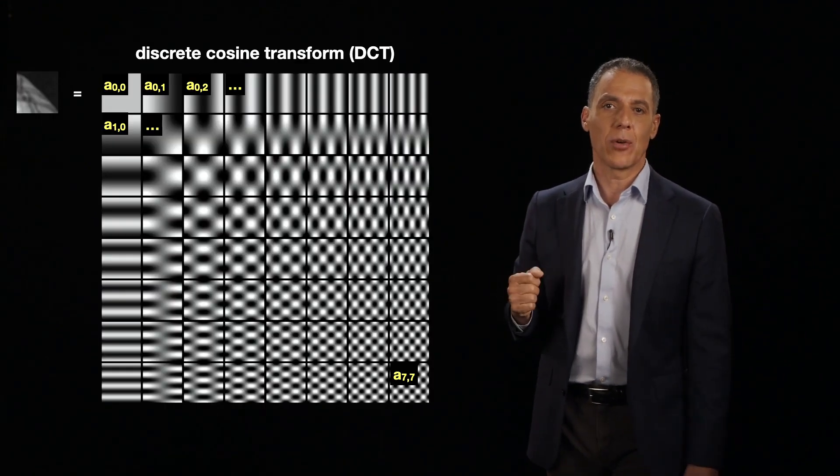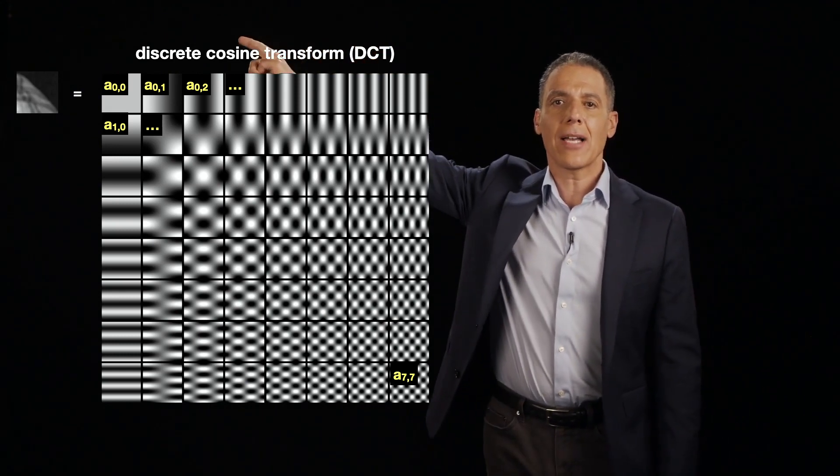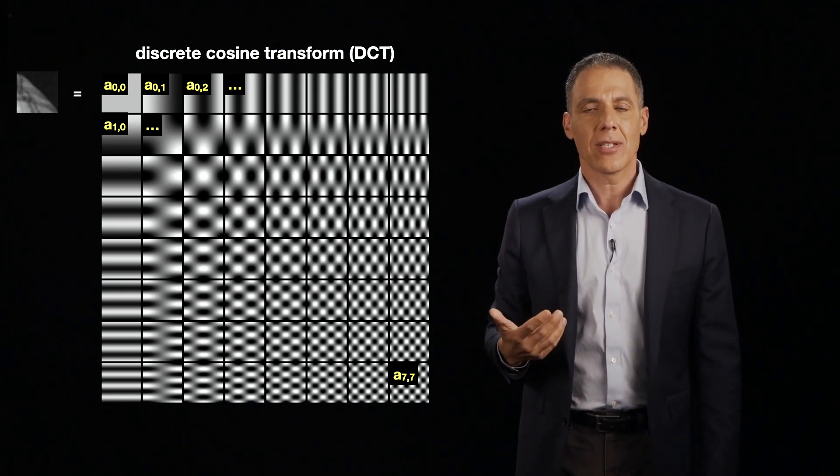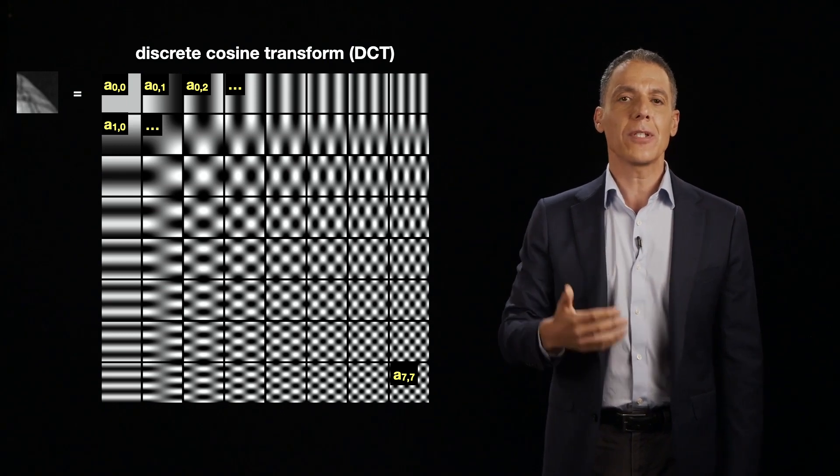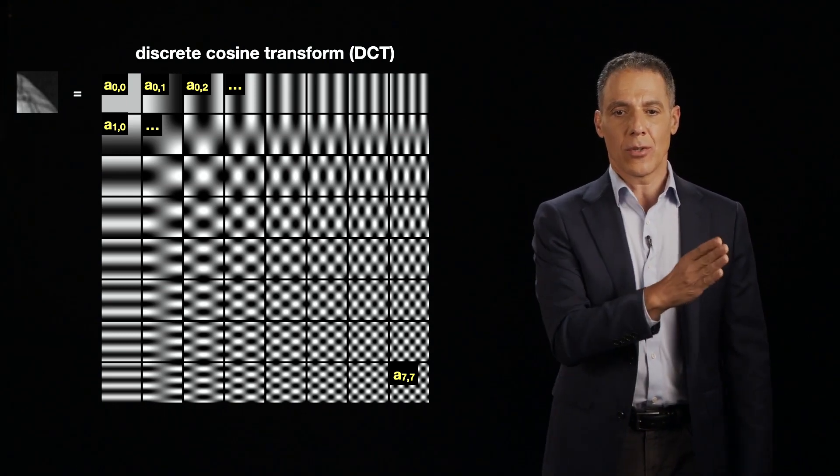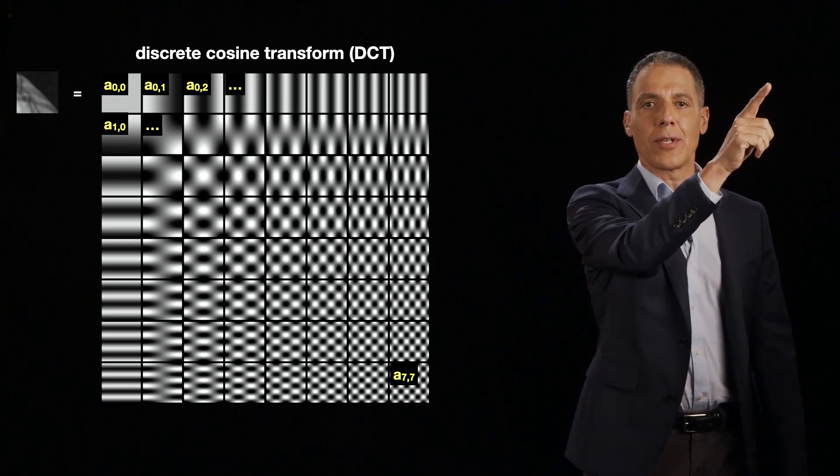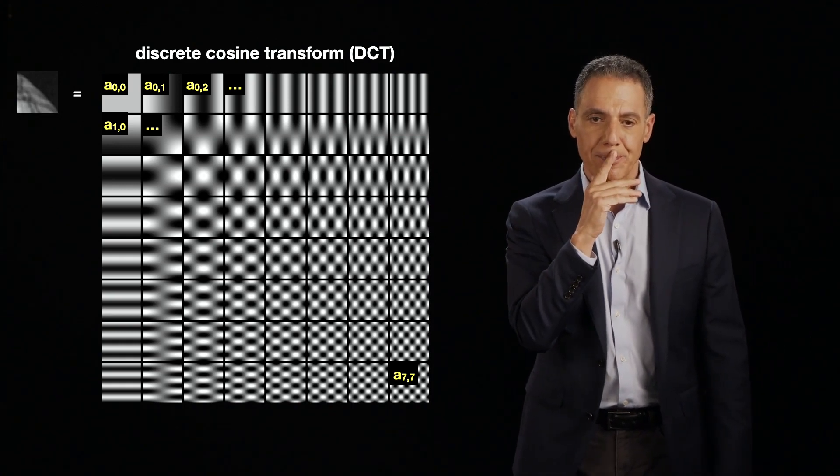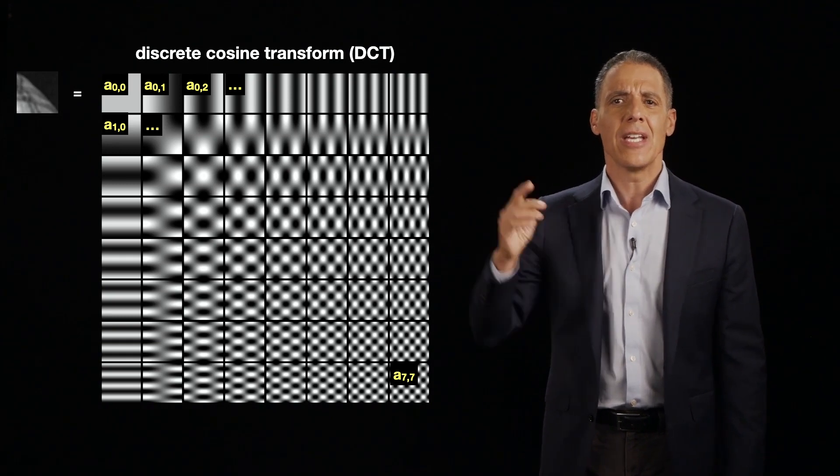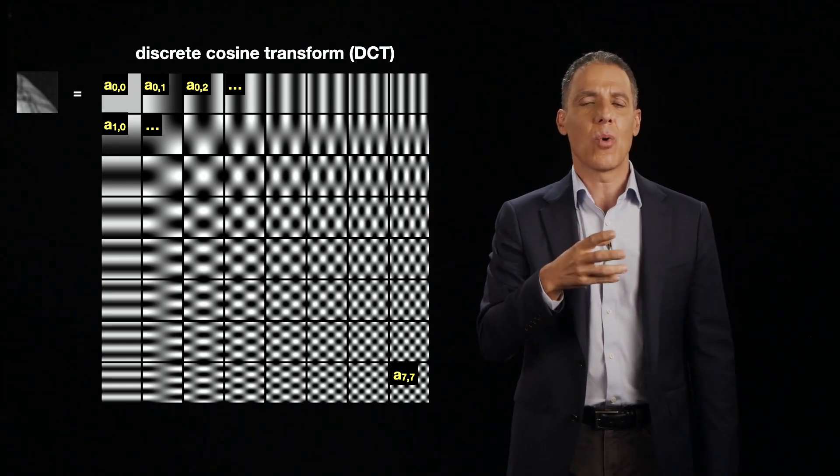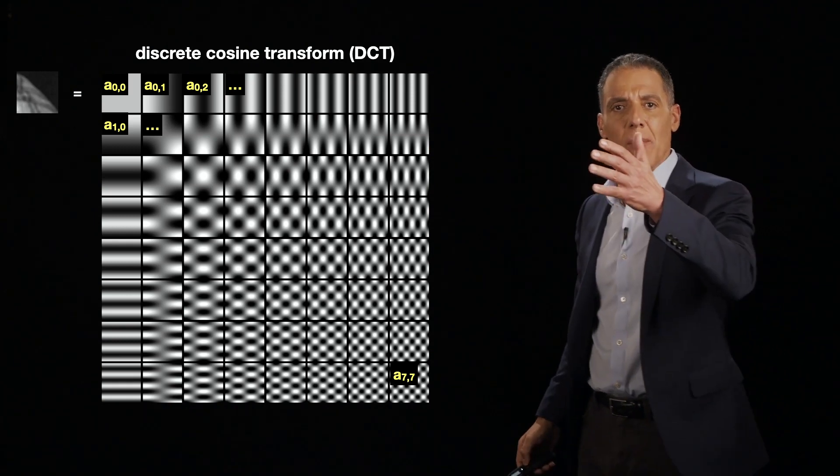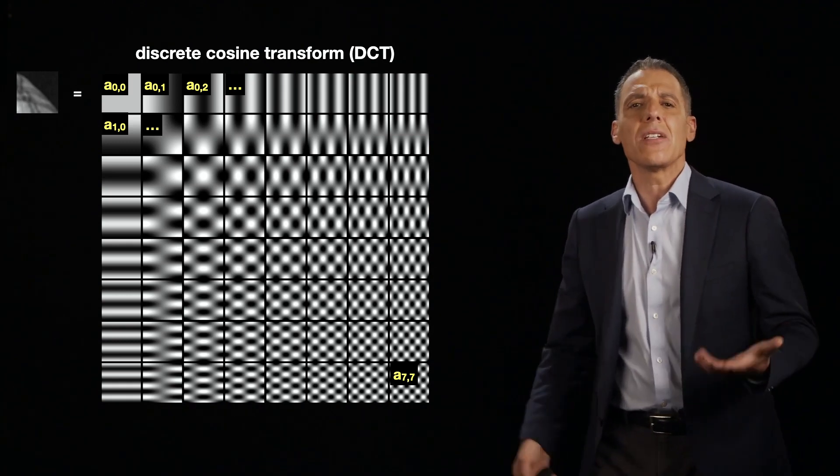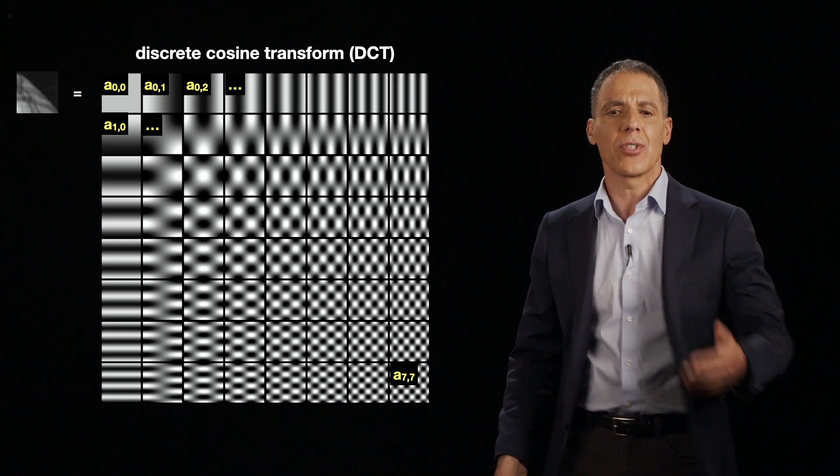The way to think about the discrete cosine transform is we're going to take a small block, a little eight by eight pixel block. This is the luminance channel, and we're going to write it as a linear combination of different cosines in terms of frequency and orientation. So frequency is left to right, top to bottom, low frequency to high frequency, and then the orientations are the vertical and the horizontal that you see here. So what are we doing here? We're saying that that little image block, every single one can be thought of as a sum, a weighted sum of all of these images here. Now, why would we do that? Why change that representation? Why go from pixels to frequency?